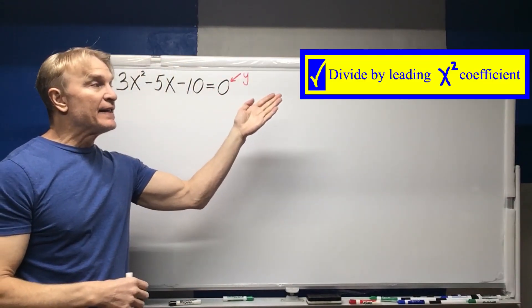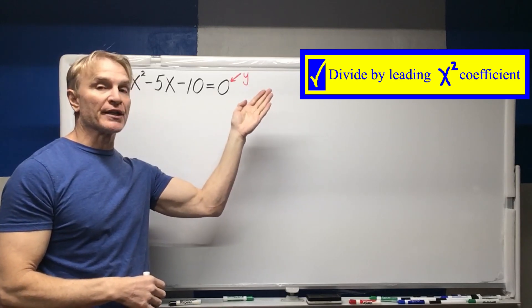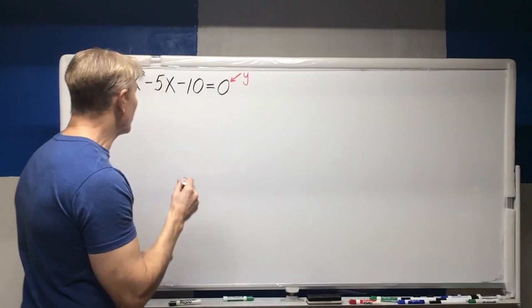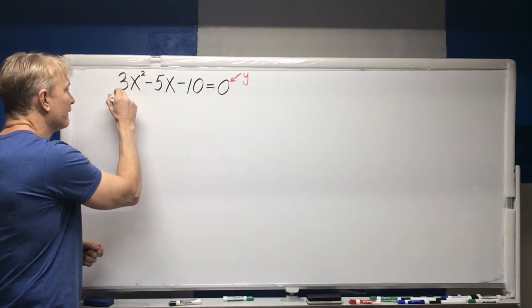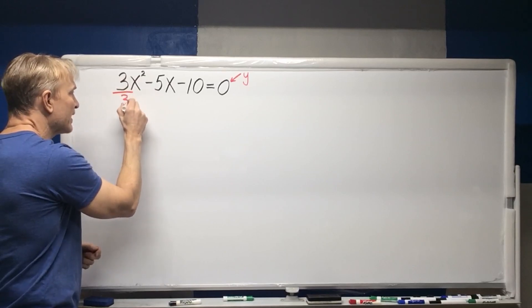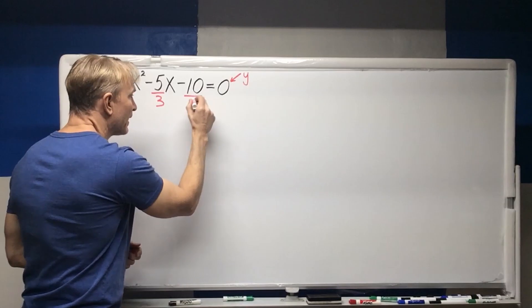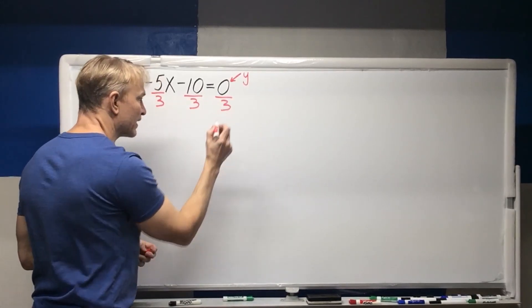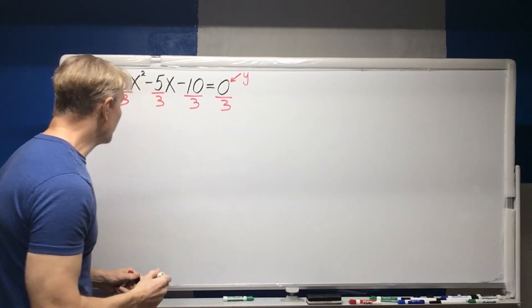All right let's get on with this. The first step, divide by leading x squared coefficient. So the leading x squared coefficient here is 3. So we are going to divide everything by 3. Divide by 3, divide by 3, divide by 3, and divide the 0 by 3 which will get us 0.